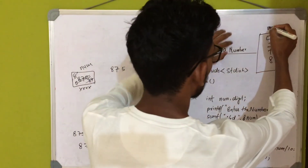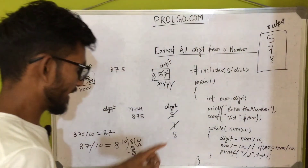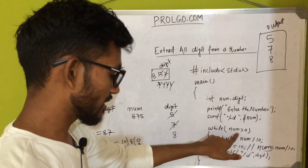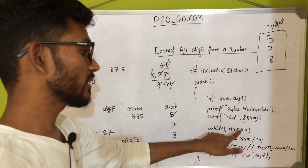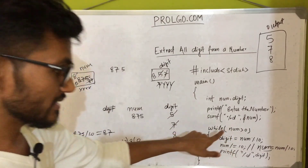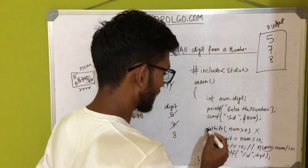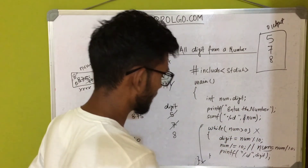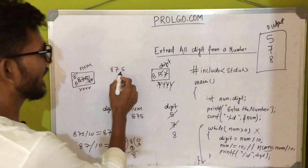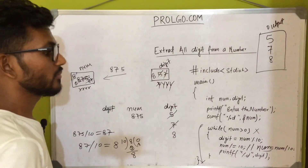Control comes back to check: is num greater than 0? num is now 0. So the condition 0 > 0 is false, and control exits the while loop. Our final output on the screen is 5, 7, 8 — the digits of 875 extracted in order.